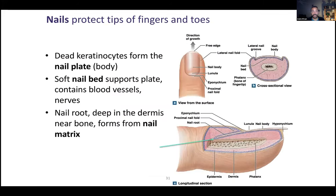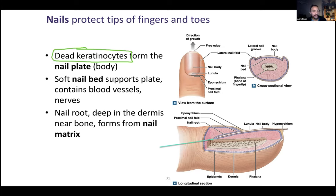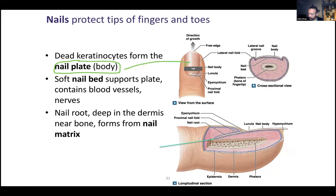Nails are another accessory organ of the integumentary system, and they're a lot like hair. The outer portion — the hard part — is also made of dead keratinocytes. It's keratin, but a special form: there's a difference between soft keratin and hard keratin, which is why your hair and nails are one texture while your skin is another. Dead keratinocytes form your nail plate, also called your nail body — that's the part of your nail that's showing, the superficial part. It's hard.